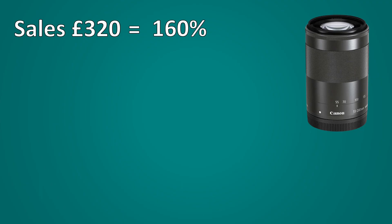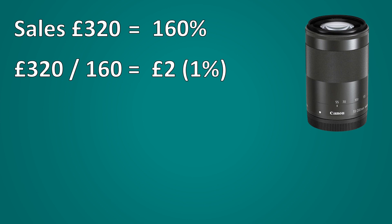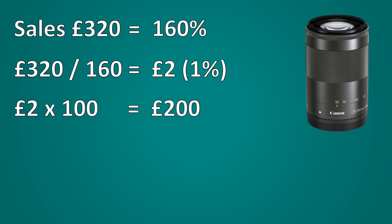These percentages are really important because in some questions it will require us to work backwards from the sales price to the cost of sales. We know that the selling price is £320, but let's say we didn't know the cost and the question said we had a markup of 60%. Since the selling price represents 160% and the cost represents 100%, we take £320 and divide it by 160 to get 1%, then multiply by 100 to get our cost of £200.